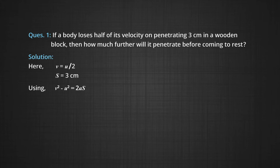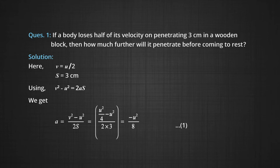Using the equation of motion V² - U² = 2AS, where V is the final velocity, U is the initial velocity, A is the acceleration, and S is the displacement, we get A = (V² - U²) / 2S. Putting V = U/2 and S = 3 cm, by solving we get A = -U²/8. Let this be equation 1.